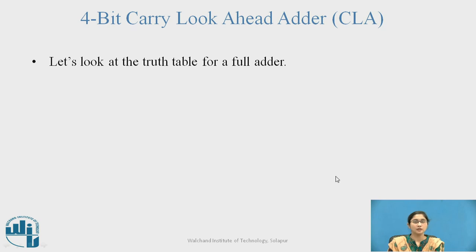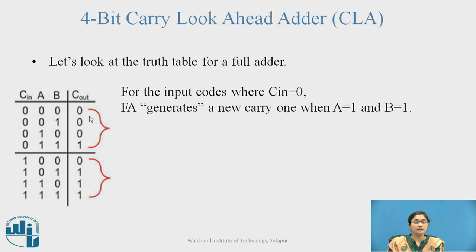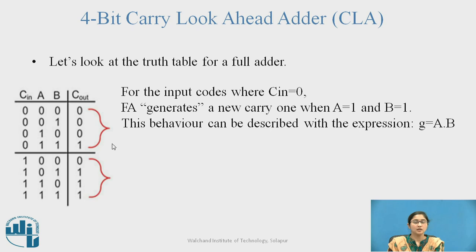Let's look at the truth table of a full adder. Because of three inputs, there are eight total combinations. For input codes where CIN = 0, a full adder generates a new carry of 1 when A = 1 and B = 1. This behaviour is described with the expression: g (generate) = A · B, because the AND gate truth table operation matches this behaviour.